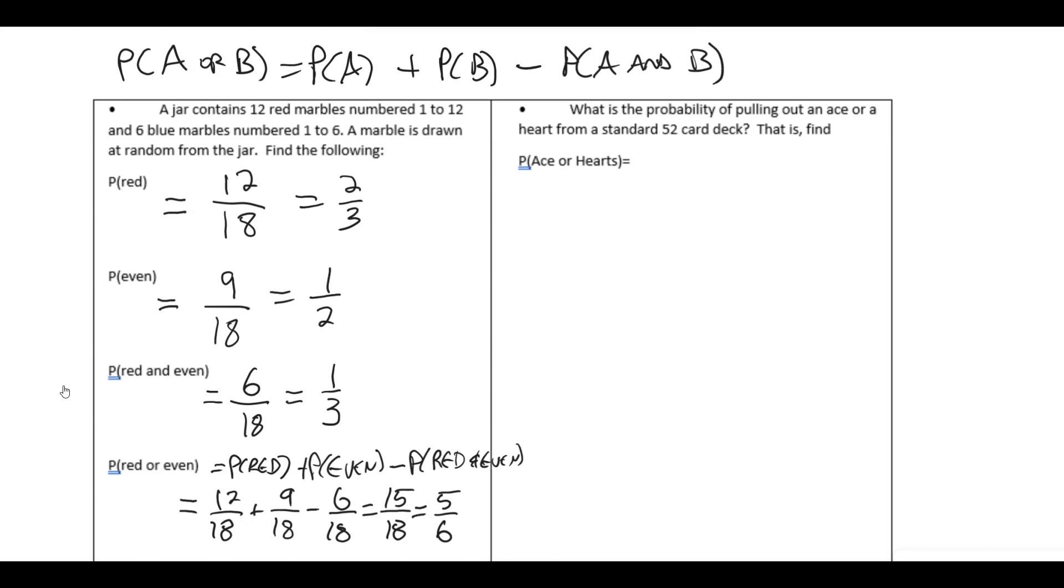So you should get 4 out of 52 plus 13 out of 52 minus 1 out of 52 equaling 16 out of 52 which reduces to 4 out of 13. All right. I hope this helps.